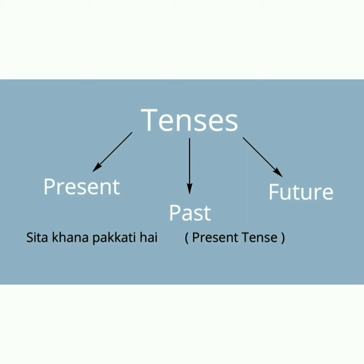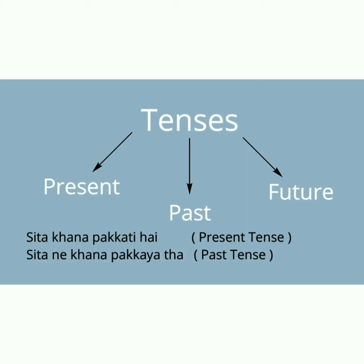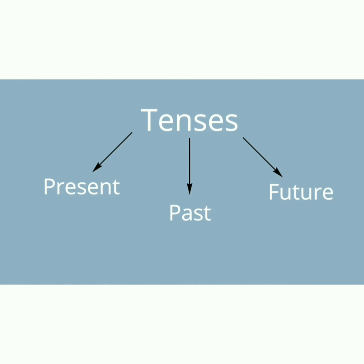اسی کو اور example سے دیکھو: 'سیتا کھانا پکاتی ہے' — present tense آگیا۔ 'سیتا نے کھانا پکایا تھا' — past tense۔ 'پکایا تھا' مطلب کہ وہ کھانا پکا چکی ہے، وہ گیا past۔ اب اسی کو future میں کریں گے تو ہم بولیں گے 'سیتا کھانا پکائے گی' — مطلب کام future میں ہوگا۔